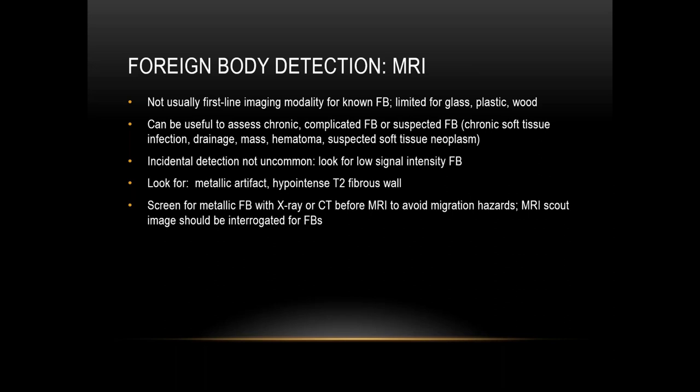Most foreign bodies appear with low signal intensity on MRI on all sequences. Secondary signs such as metallic artifact or a fibrous surrounding T2 hypointense wall can be helpful. If there is a known or suspected history of foreign body, it is important to screen with x-ray or CT before MRI is performed, and the MRI scout image should be interrogated for the presence of foreign bodies.